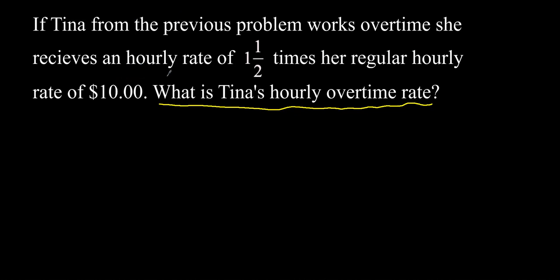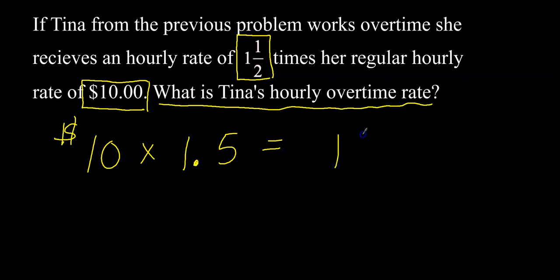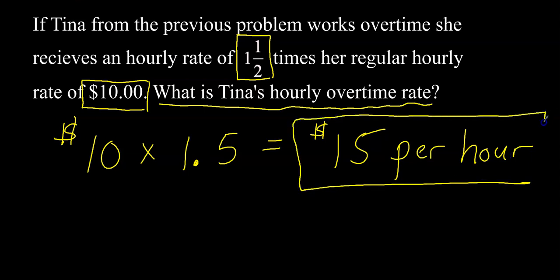To figure that out, you simply take the $10 and multiply it by one and one half. So it's $10 — her regular pay per hour — times 1.5. Let's multiply this out and we get 15. So her overtime rate is $15 per hour instead of $10. Sometimes it'll say double time depending on what state you live in. If that happens, it would be 10 times 2 — so don't let double time throw you off if you see it.